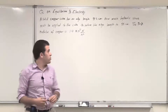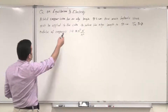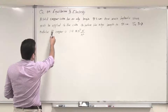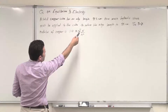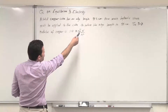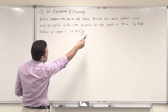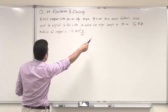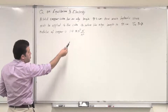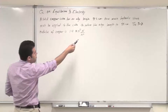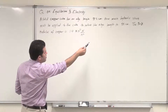As-salamu alaykum. This question is on equilibrium and elasticity. A solid copper cube has an edge length of 85.5 centimeters. How much hydraulic stress must be applied to the cube to reduce the edge length to 85 centimeters?